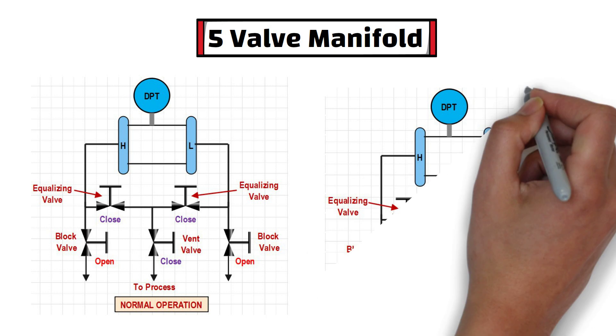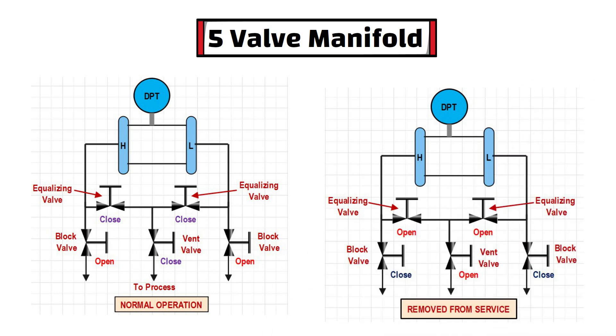On the other side, when DPT is removed from process for service purpose, both block valve is in closed position and both equalizing valve is in open position. At the same time, vent valve is in open position too.